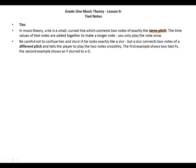Be careful not to confuse ties and slurs. A tie looks exactly like a slur, but a slur connects two notes of a different pitch and tells the player to play the two notes smoothly. The first example shows two tied F's. The second example shows an F slurred to a G.